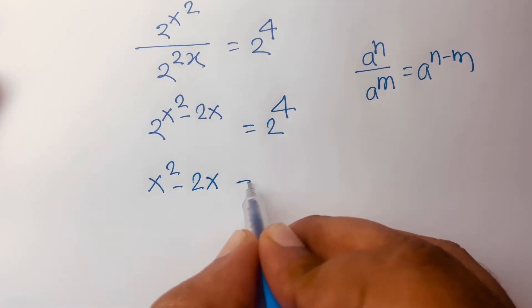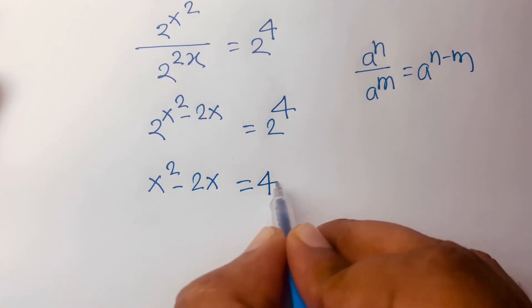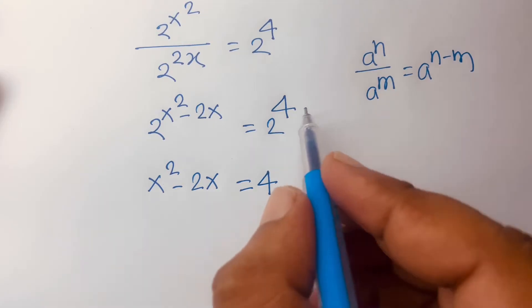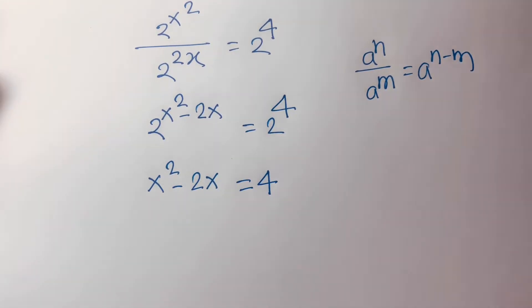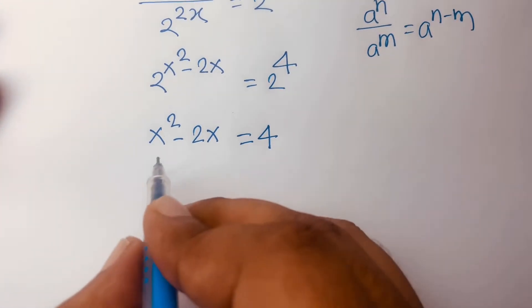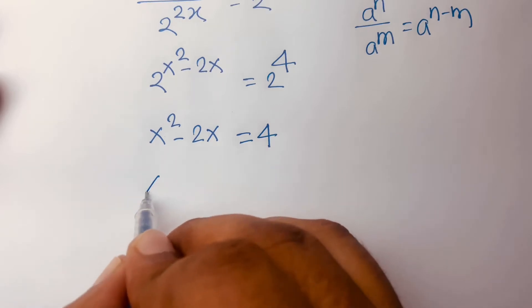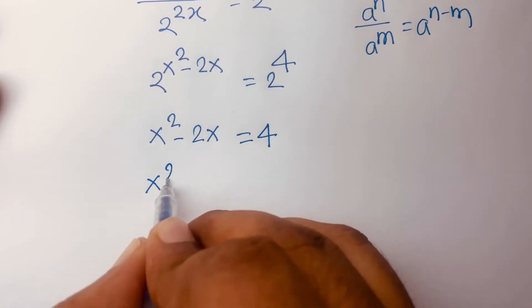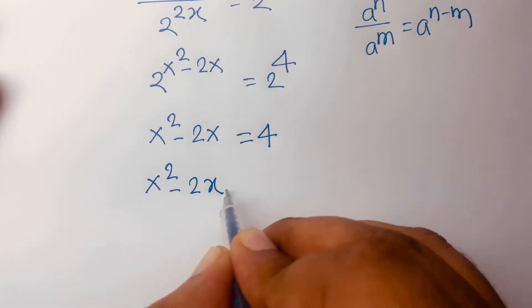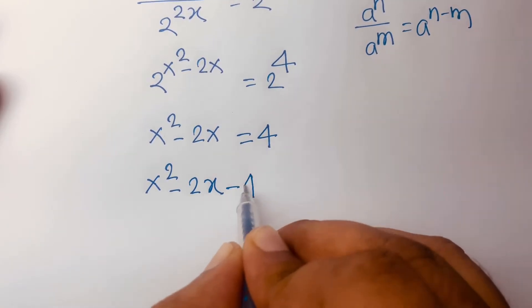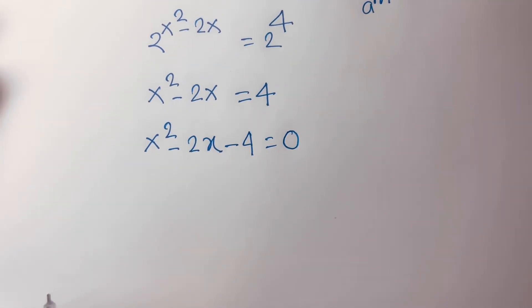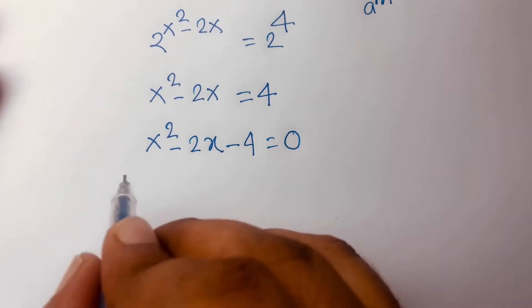Then I can say it will be x squared minus 2x is equal to 4, because the bases are the same so the exponents are equal. Then this equation becomes x squared minus 2x minus 4 is equal to 0.